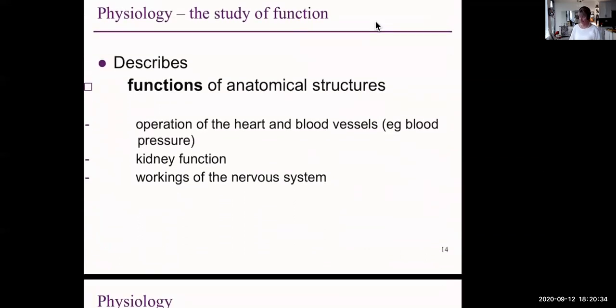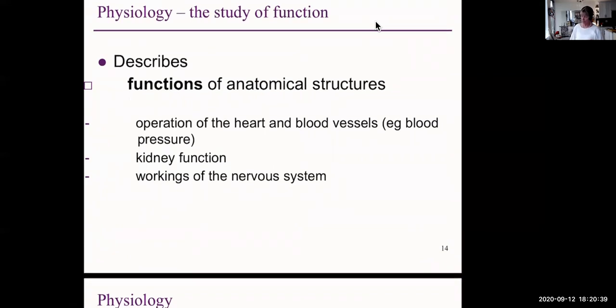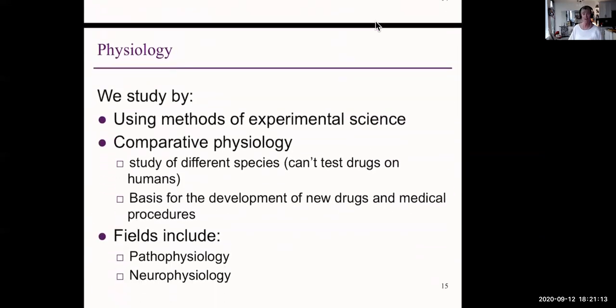Physiology is a study of function. It describes the functions of the anatomical structures. For example, we talked about the heart. How does the heart pump blood through blood vessels to the body? So we study things like blood pressure, cardiac volume. We might be interested in kidney function. The form of the kidney is fantastic for its function, in that there are thousands of tubules that filter our blood every day. And in this course, we're looking at the workings of the nervous system. How does it communicate to the body in such an efficient fashion?